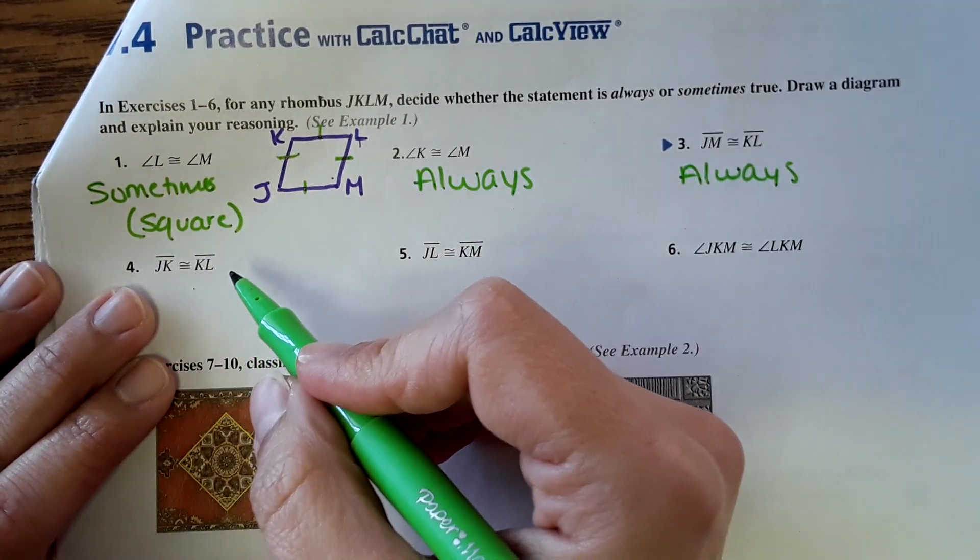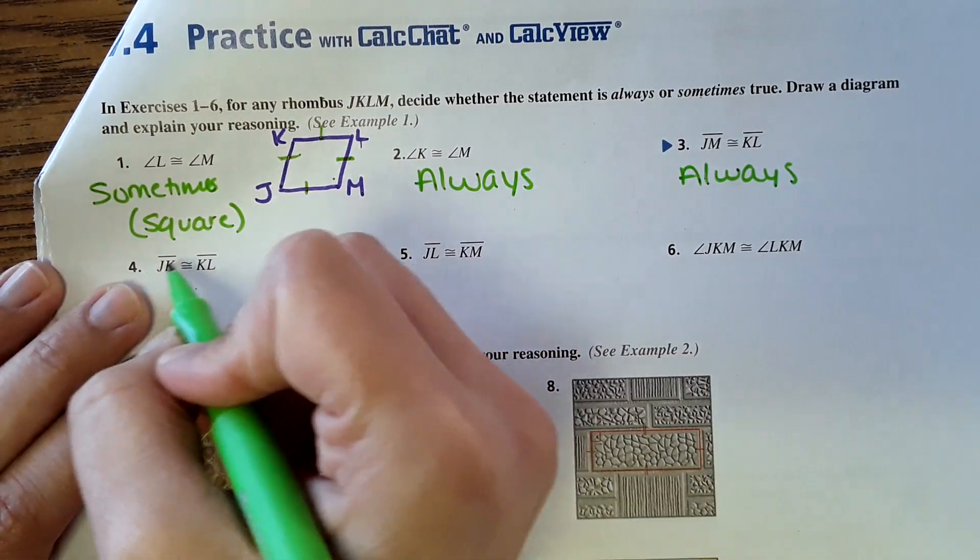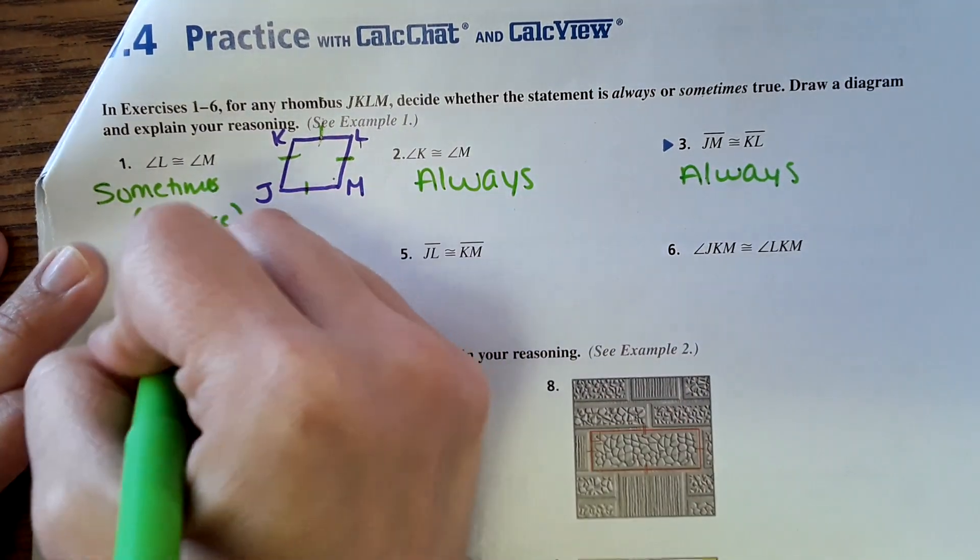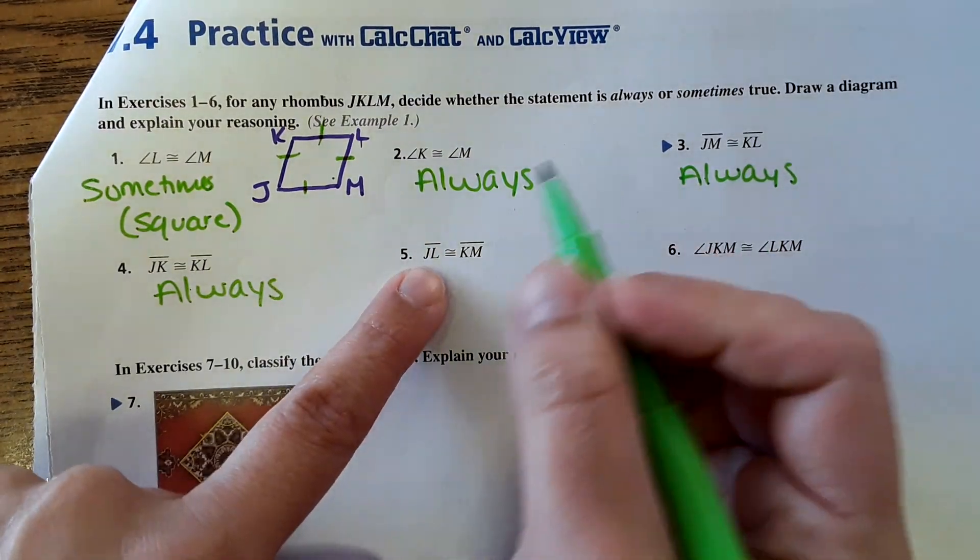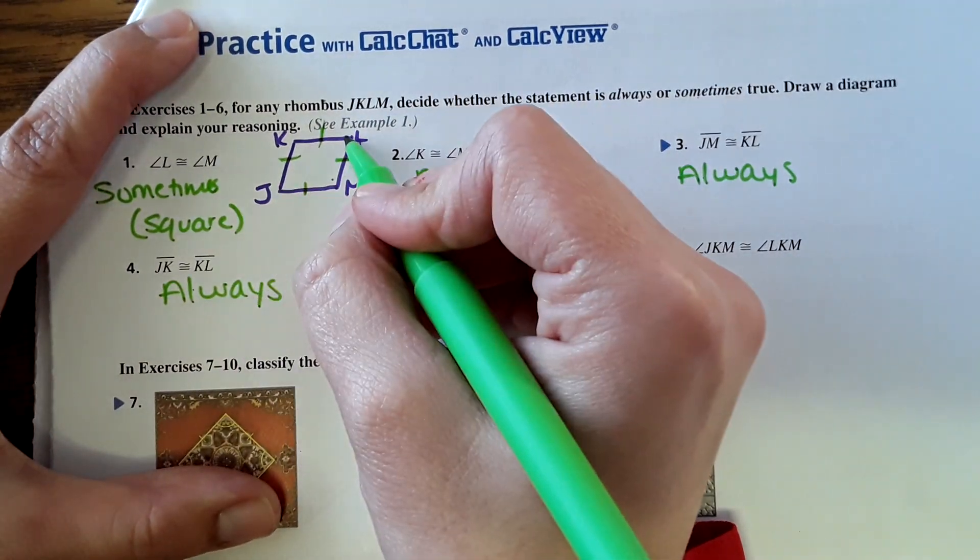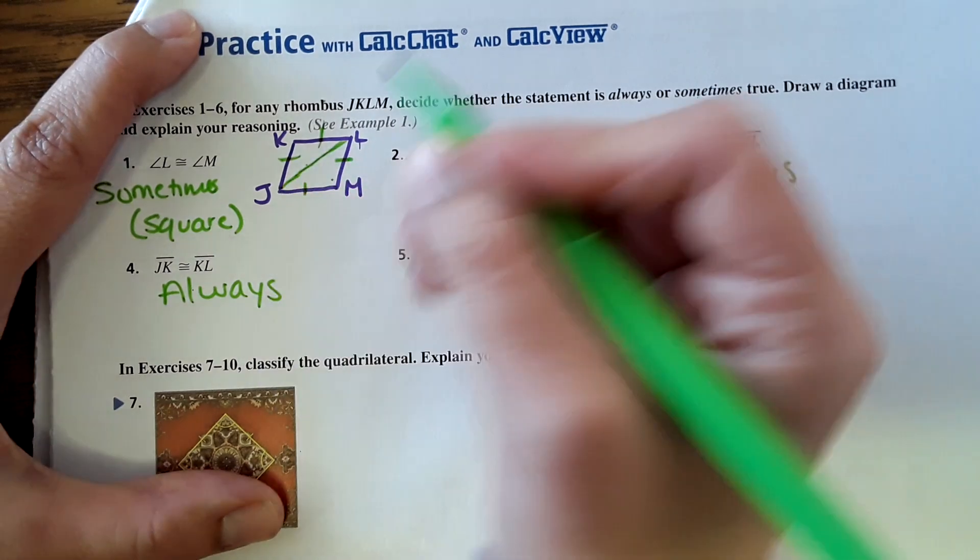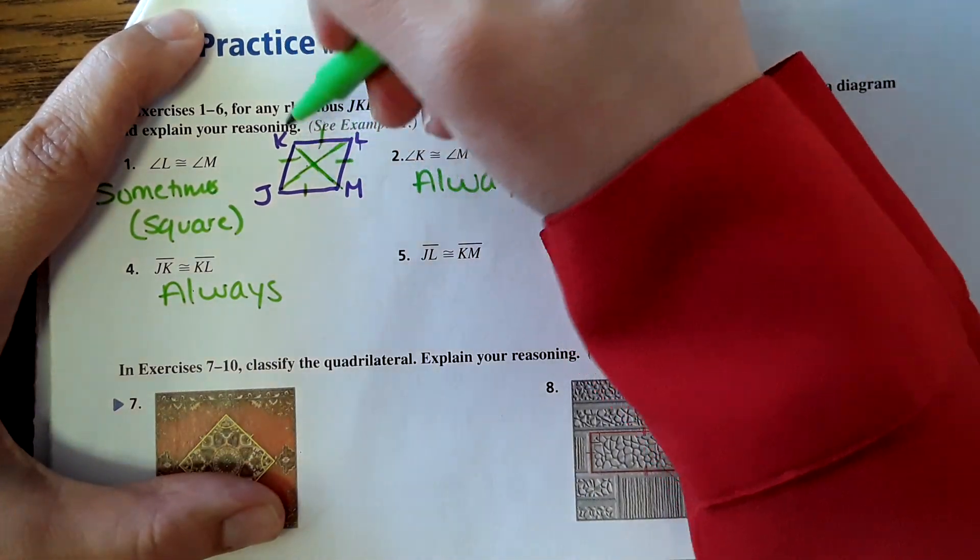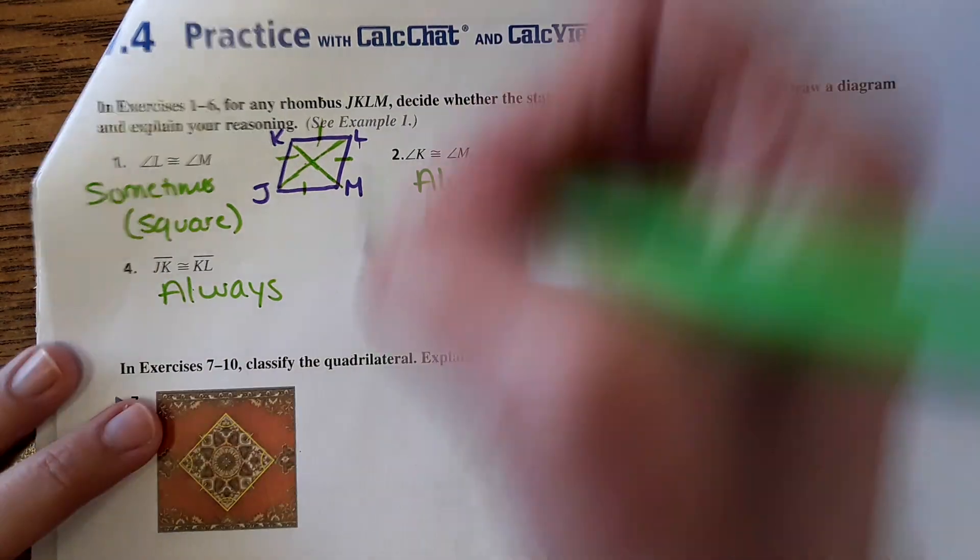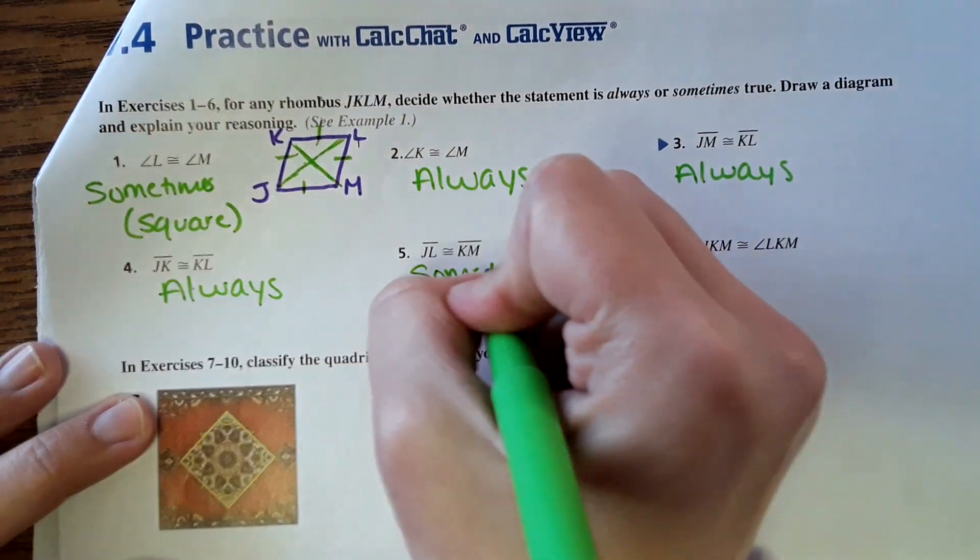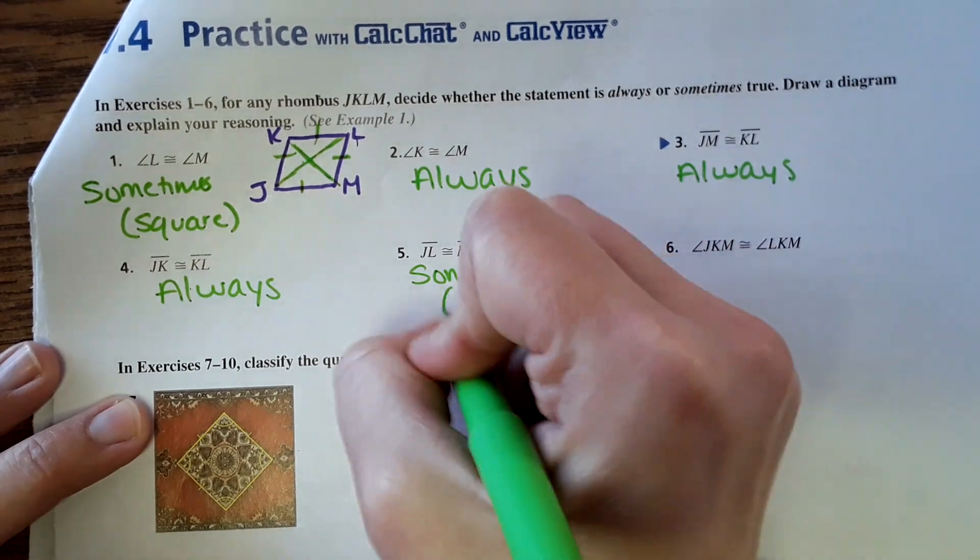JK congruent to KL. Yes, always. Rhombus has all the sides equal. Then JL and KM is asking if the diagonal is equal to this diagonal. Not all the time, only in a square. So sometimes only if the rhombus is a square.